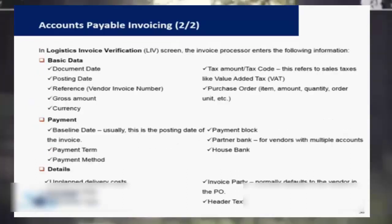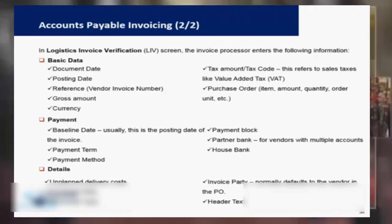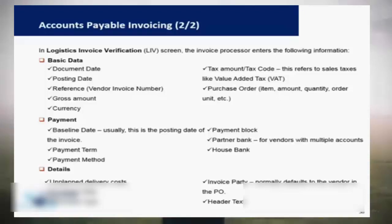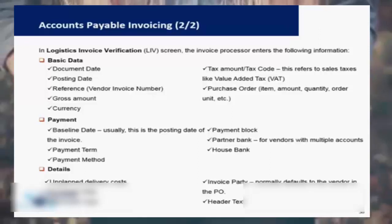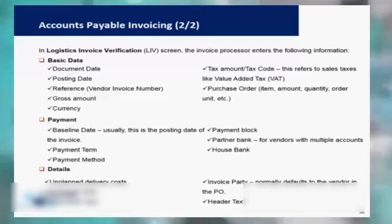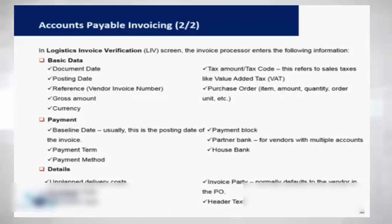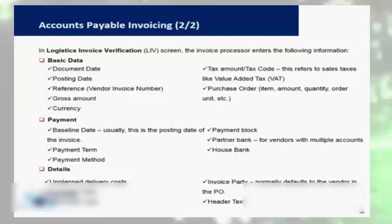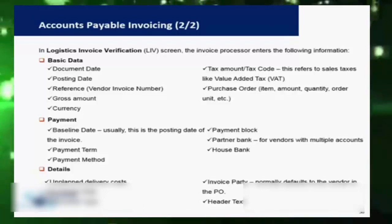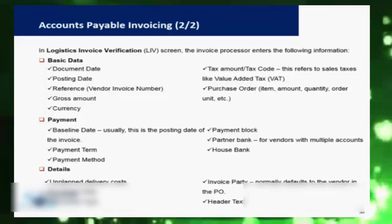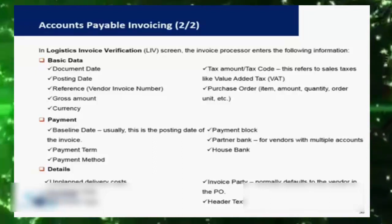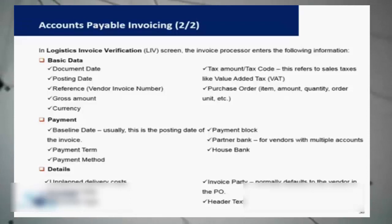The logistics invoice verification screen has different parts. In the basic data section, you enter the document date, posting date, the actual vendor invoice number in the reference field, the currency, the amount, the tax amount or tax code, and the purchase order number. Once you enter these and click Enter, the details from the purchase order are automatically fetched — you do not need to manually enter the quantity or material type, as these are all captured from the purchase order automatically.